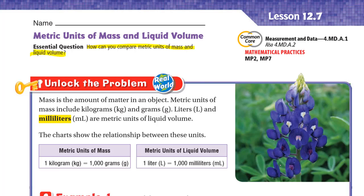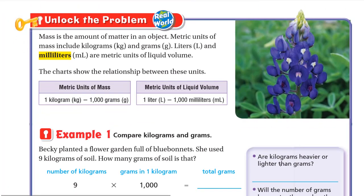If we are on Earth, our mass is the same as our weight. But for example, on the Moon, the weight will be lighter than the weight on Earth. And liquid volume is the amount that a container can take. So let's unlock the problem.